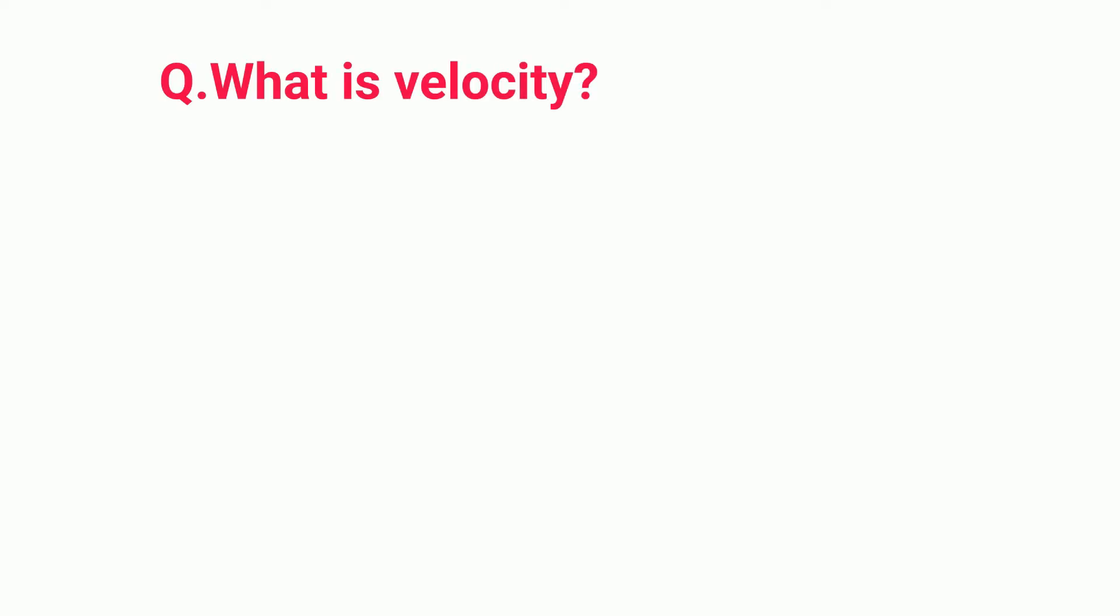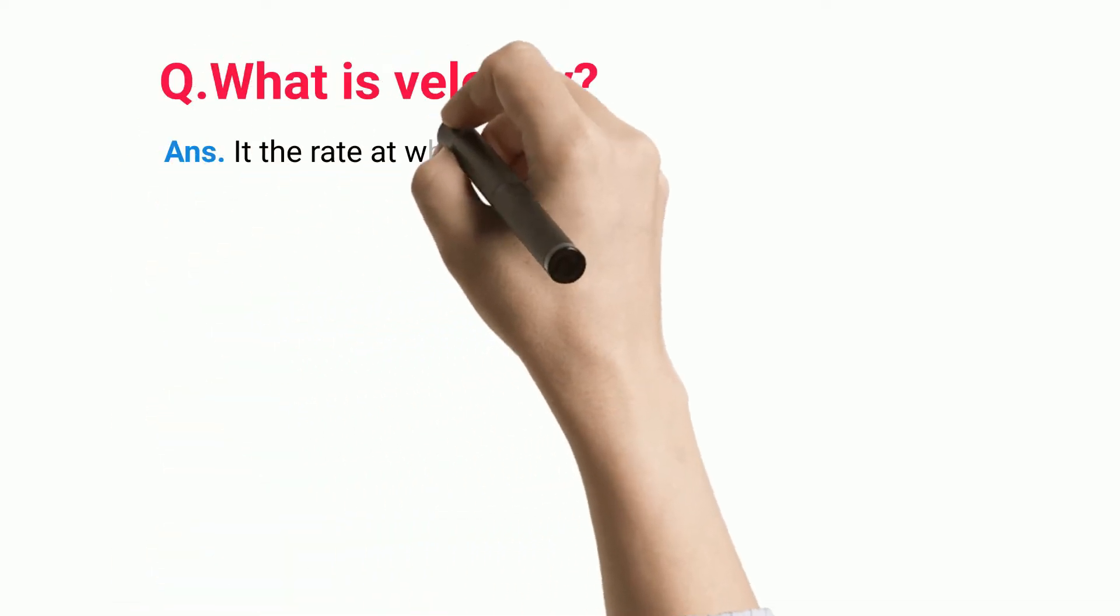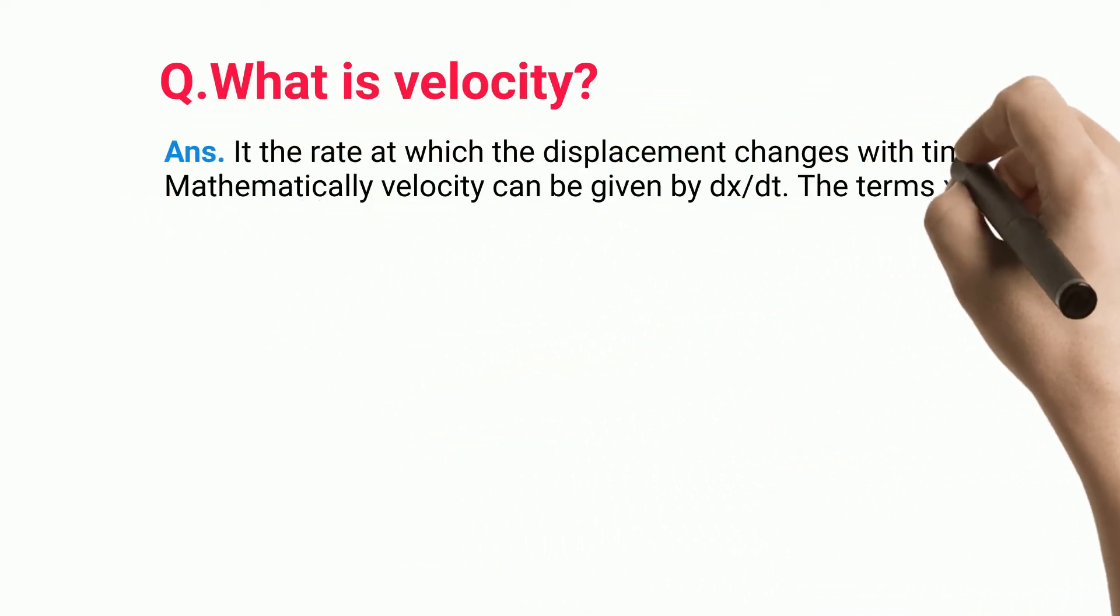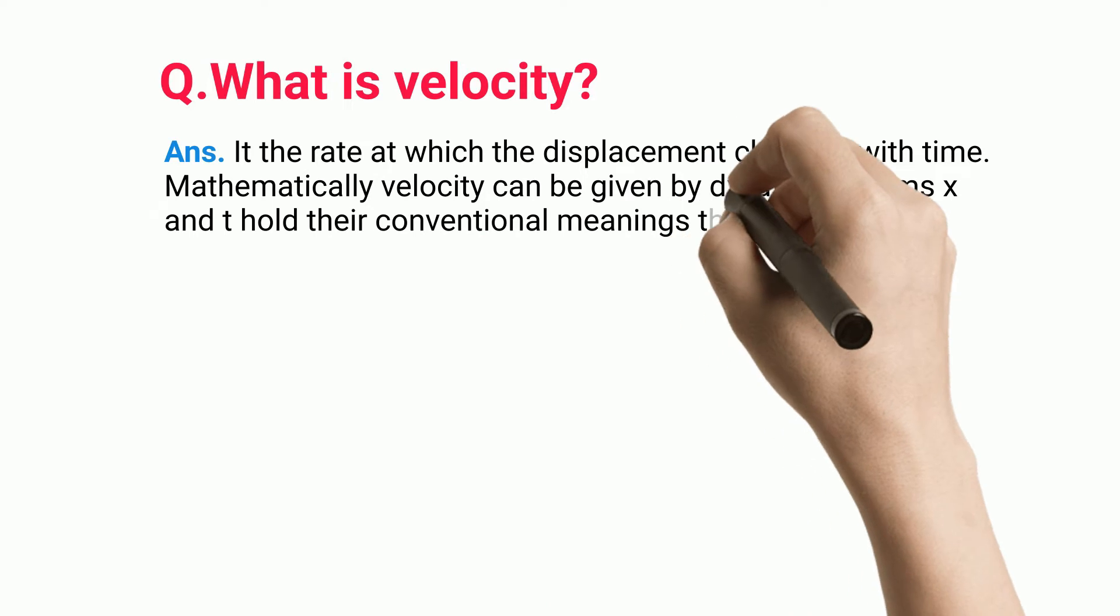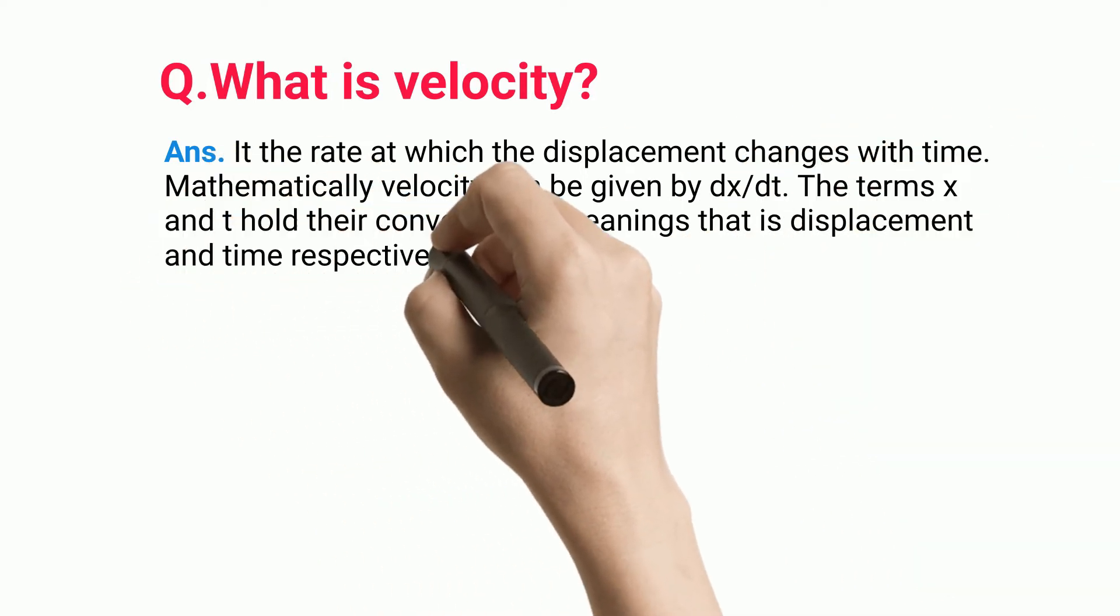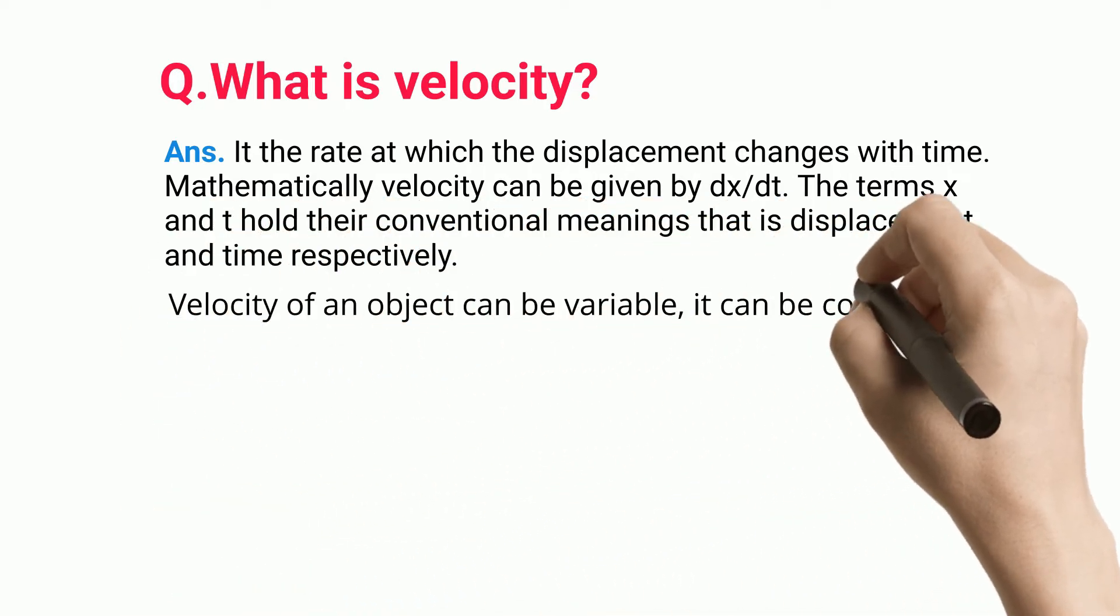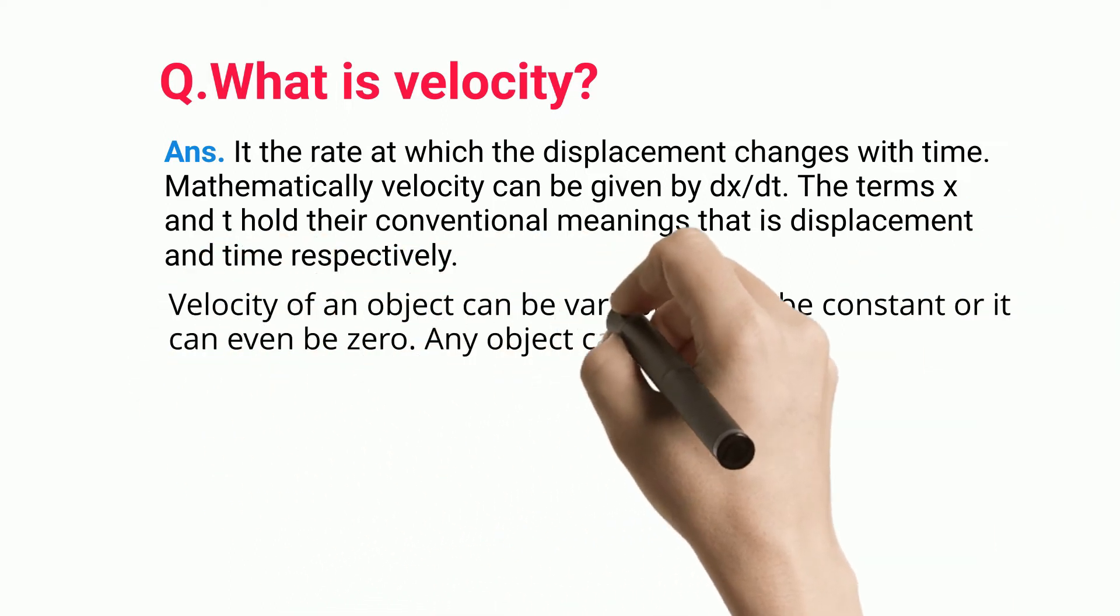What is velocity? It is the rate at which the displacement changes with time. Mathematically, velocity can be given by dx/dt, where x and t hold their conventional meanings: displacement and time respectively. Velocity of an object can be variable, constant, or even zero.